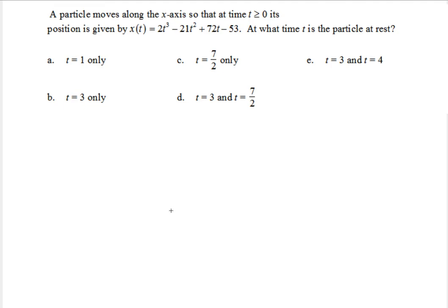In this example, we're going to find, given the fact that the position function for the particle is given as 2t³ - 21t² + 72t - 53, we need to find the time t at which the particle is at rest.